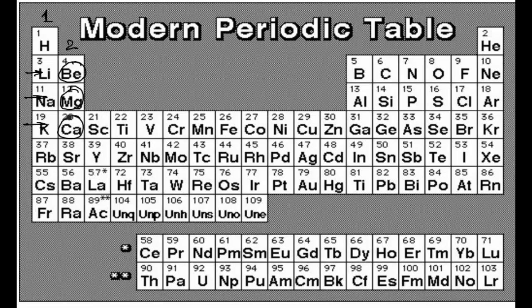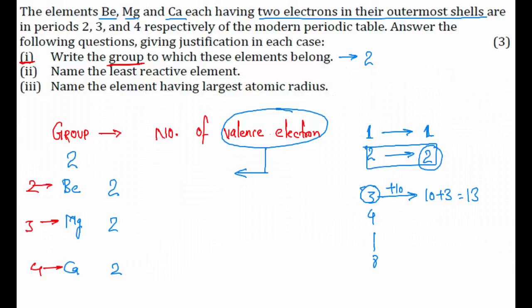Now coming to the second part: name the least reactive element. And the third part: name the element having the largest atomic radius. We will attempt the third part first, so that it will be easier to understand the reasoning behind the answer to the second part.